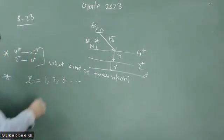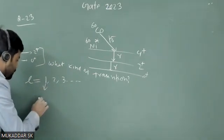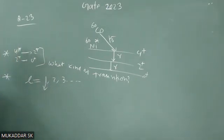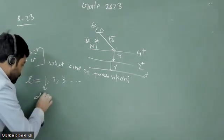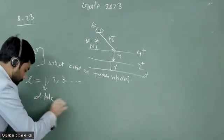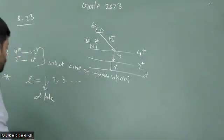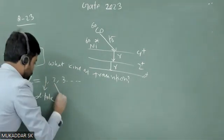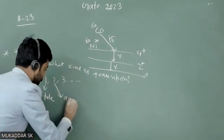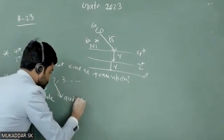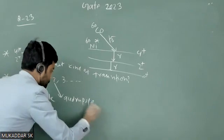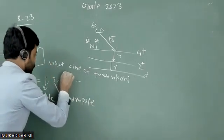2 is representing quadrupole transition, 3 is representing octopole transition, and so on.